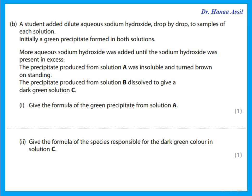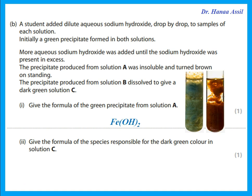A student added dilute aqueous sodium hydroxide drop by drop to samples of each solution. Initially a green precipitate formed in both solutions. More aqueous sodium hydroxide was added until it was present in excess. The precipitate from solution A remained insoluble and turned brown on standing. That would be iron(II) because Fe²⁺ with sodium hydroxide gives a green precipitate insoluble in excess, and it is then oxidized by oxygen in the air to become iron(III), turning reddish brown.